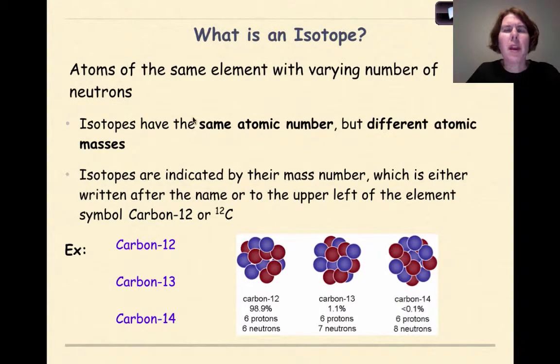What is an isotope? Isotopes are atoms of the same element with varying numbers of neutrons, so they're going to have the same atomic number, but different atomic masses. In other words, the protons are going to be the same in all the atoms, but the number of neutrons will be different. Isotopes are indicated by their mass number, which is either written after the name, that's one way that we can see it, or to the upper left of the element symbol.